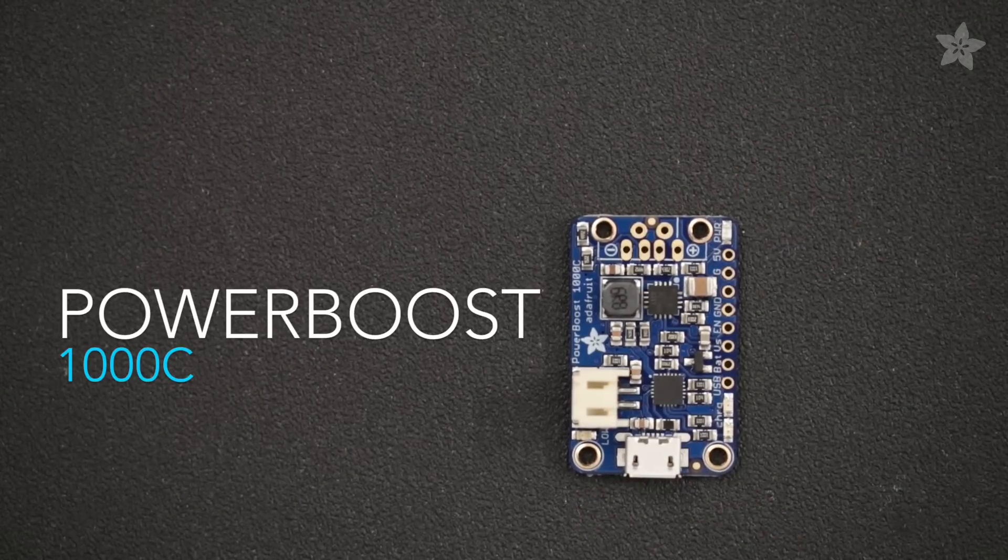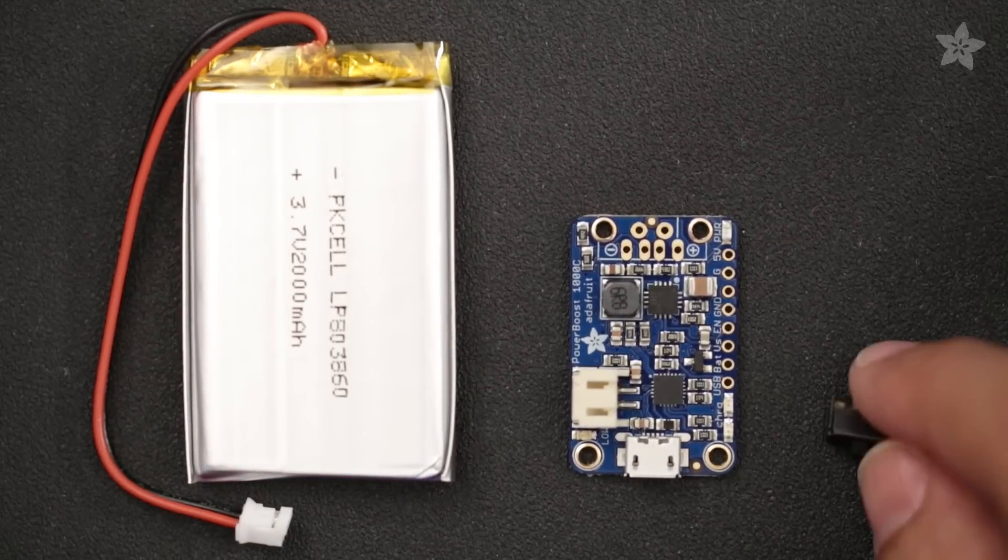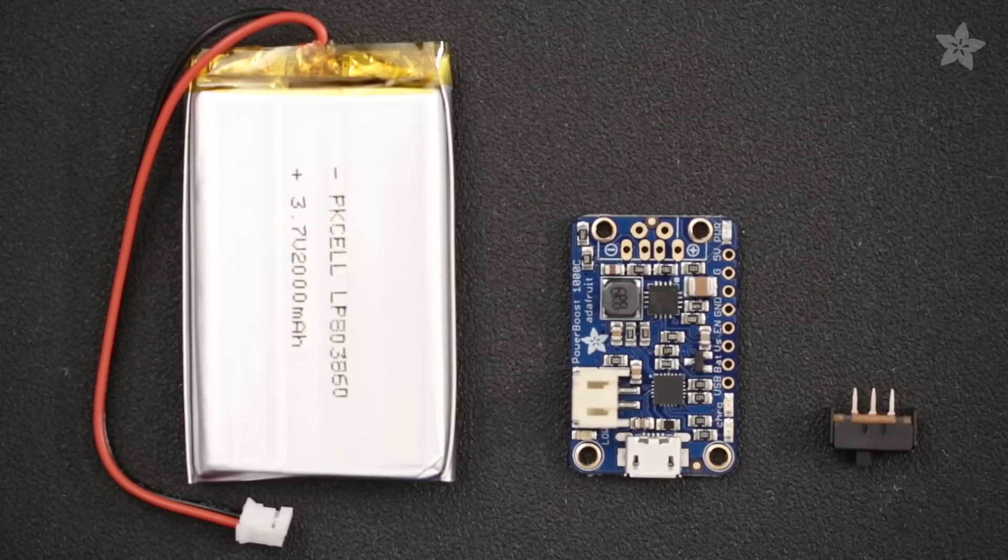The Adafruit PowerBoost 1000C features smart charging and you can pick one up at the Adafruit shop. Combined with a 2,000 mAh LiPo battery and a slide switch, you can build your own wireless charger.